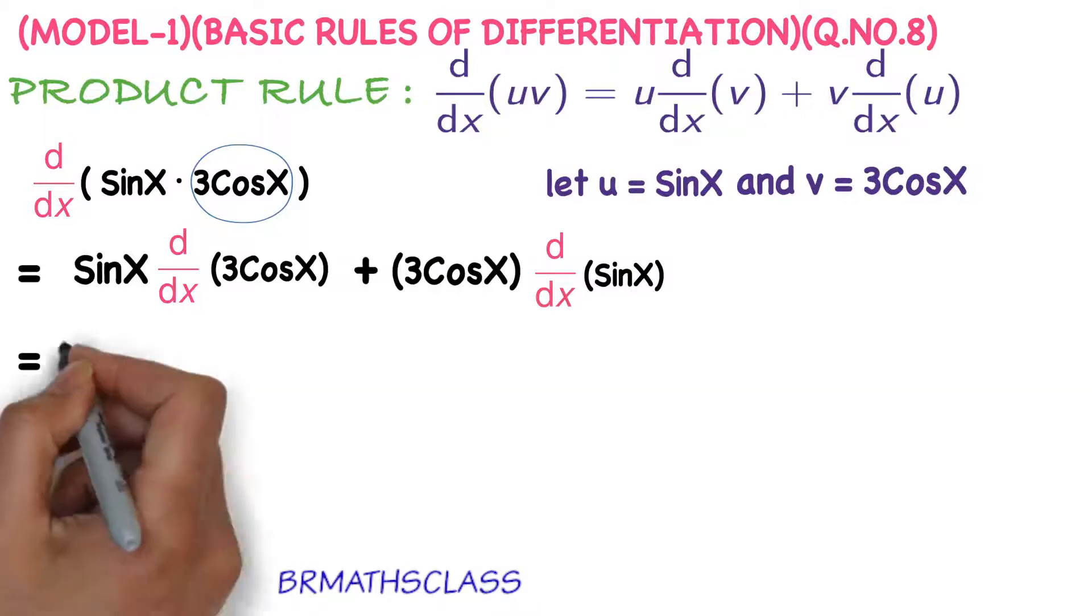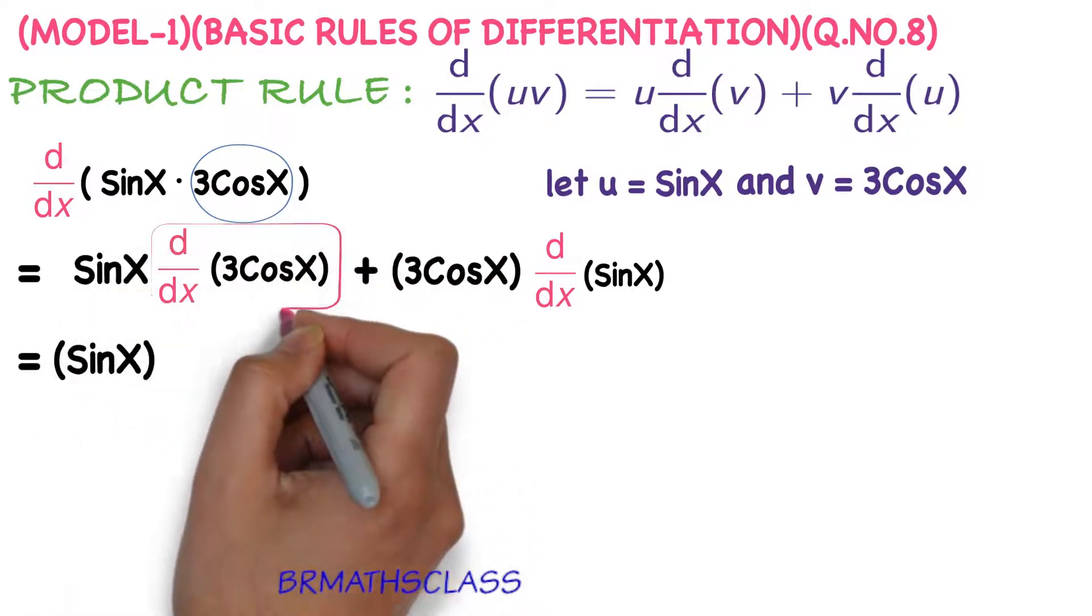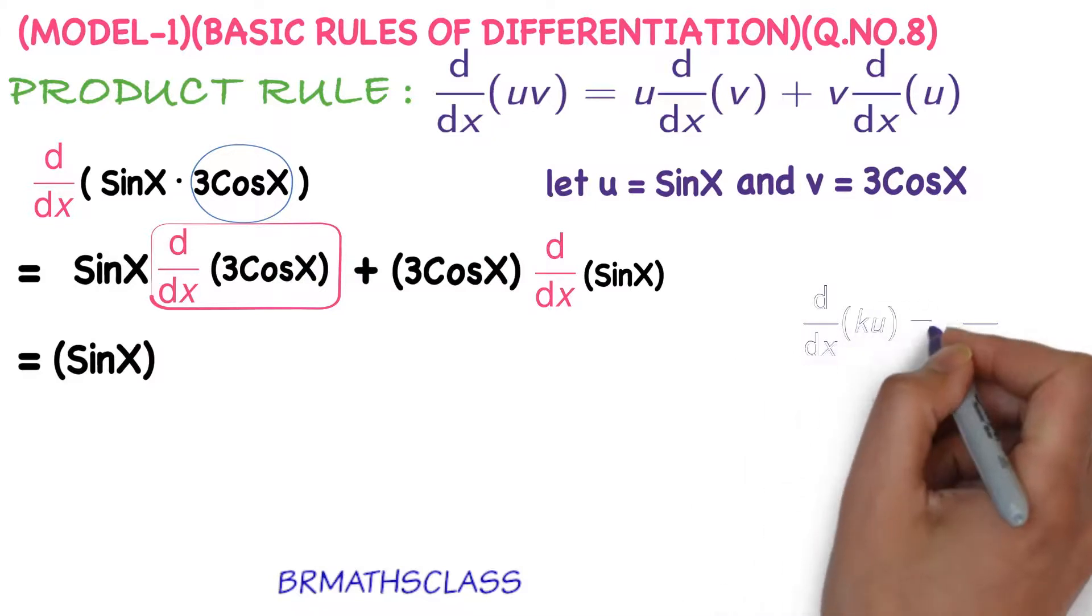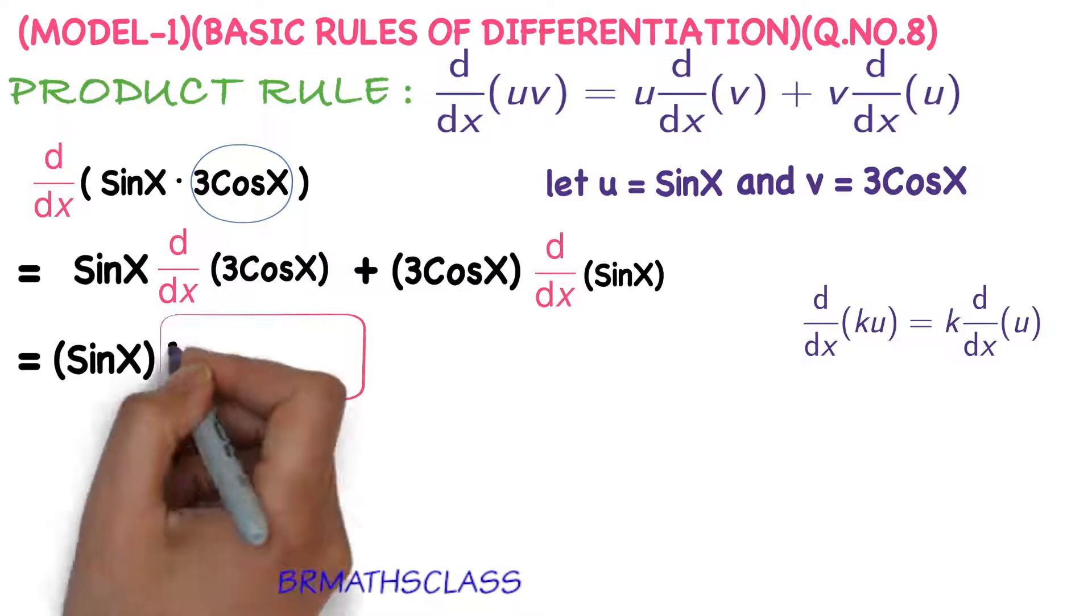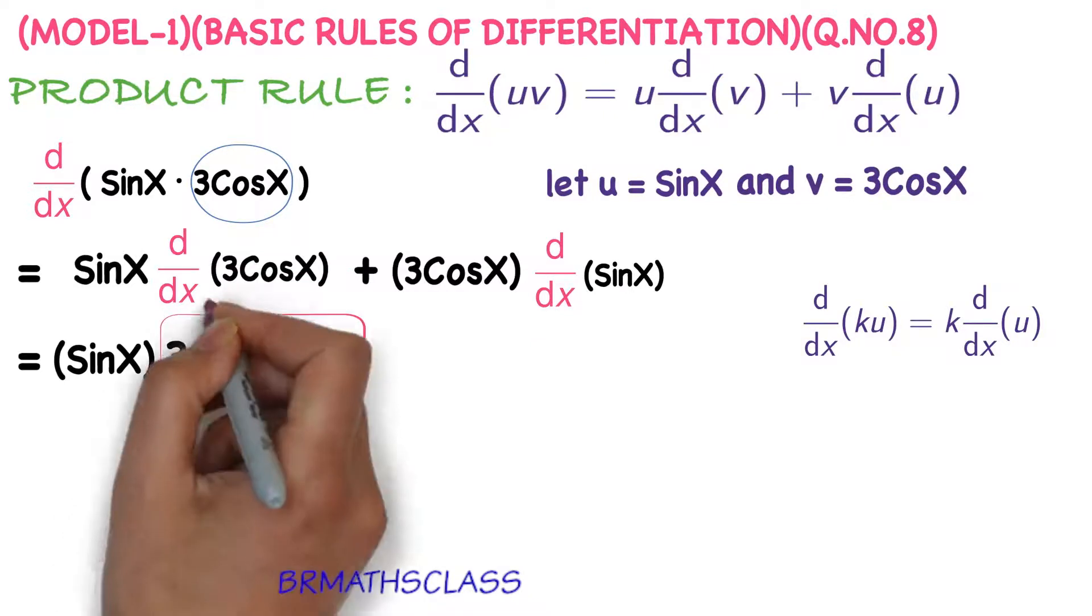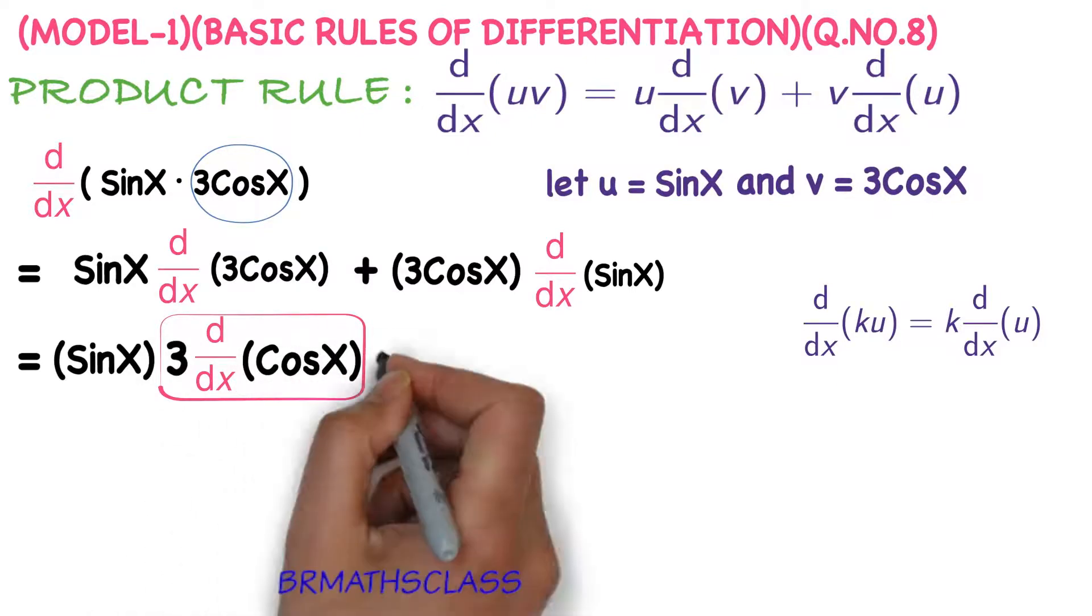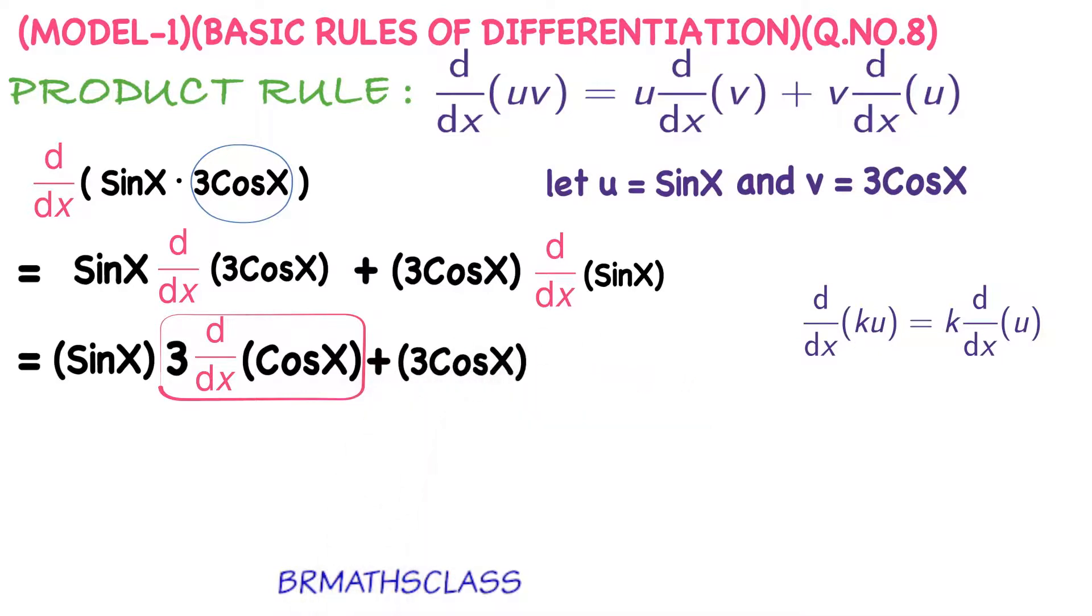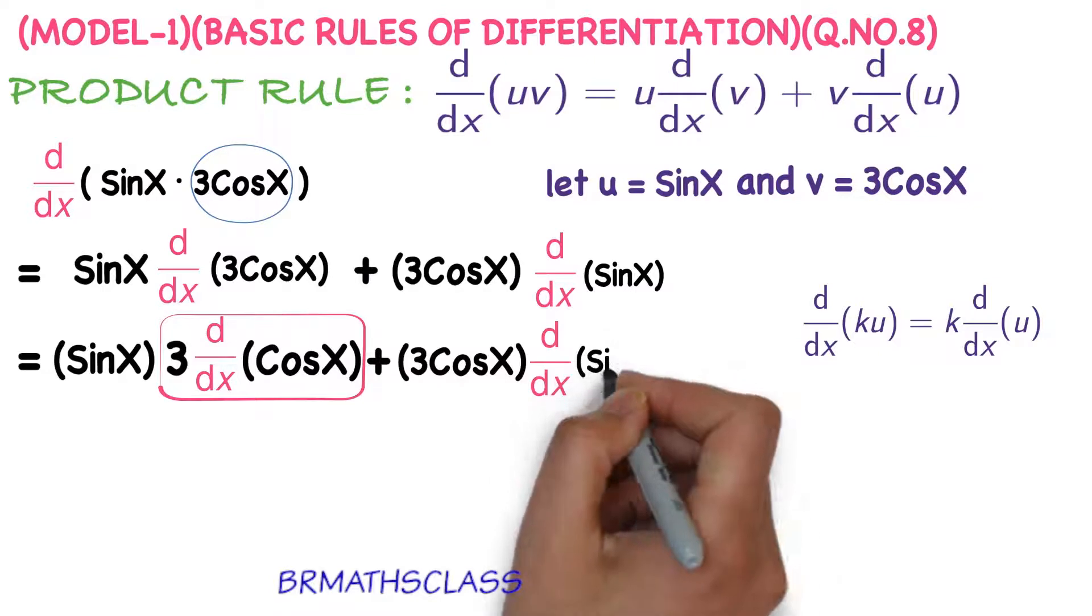Now, continuation of this step. Sin x into d by dx of 3 cos x. We already done this earlier. However, I will repeat: d by dx of ku is k into derivative of u. So d by dx of 3 cos x can be written as 3 into derivative of cos x, plus 3 cos x into derivative of sin x.